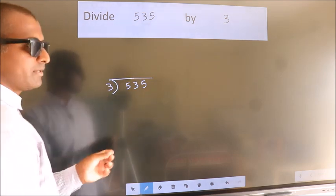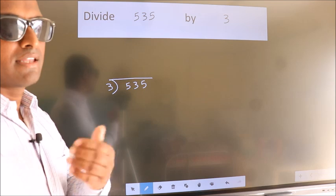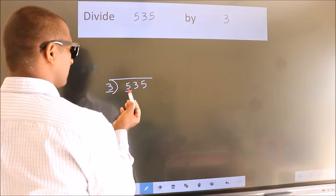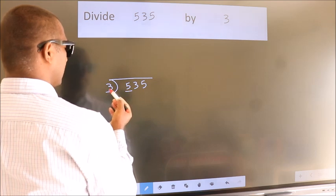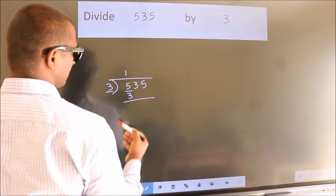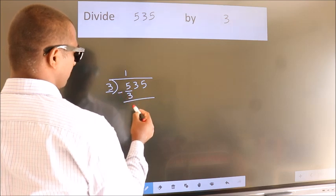This is your step 1. Next, here we have 5, here 3. A number close to 5 in the 3 table is 3 once, which is 3. Now we should subtract. We get 2.